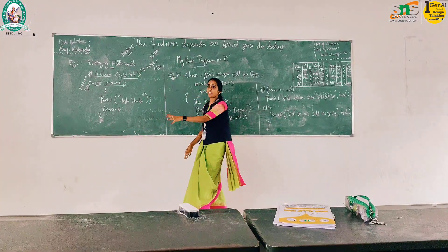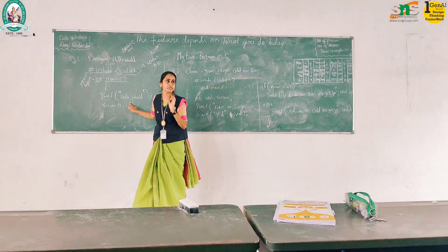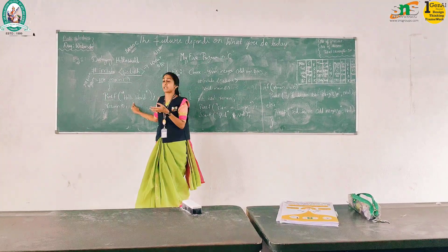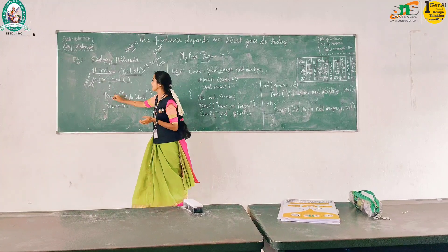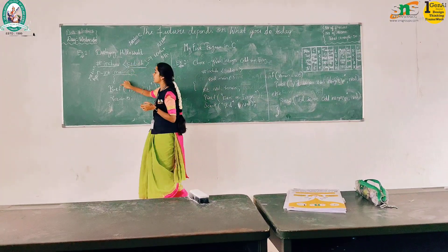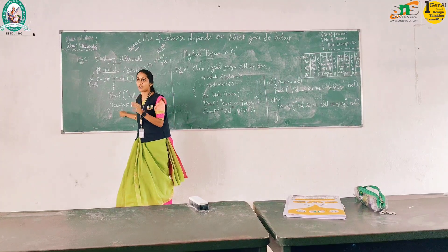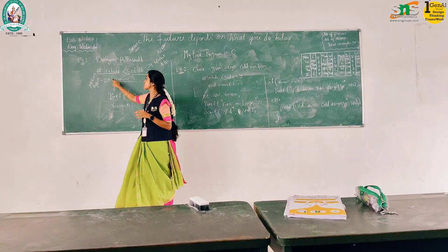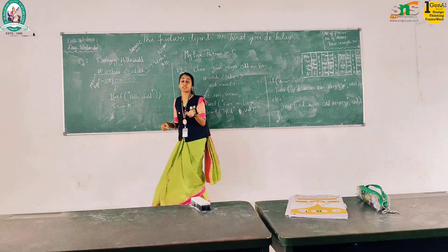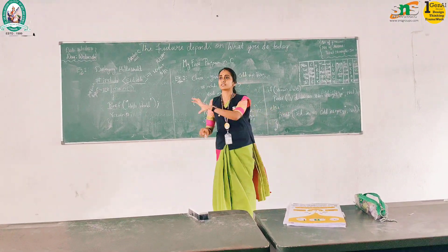So this is the structure of your small program. Each and every word is a predefined word — you should not change any word. It is case sensitive. So if you are using a capital P, it will show you an error. Each and every word is case sensitive — you should use the exact case. In typing, if there is a need for a space, you should give a space. If there is no space, it will show you errors.